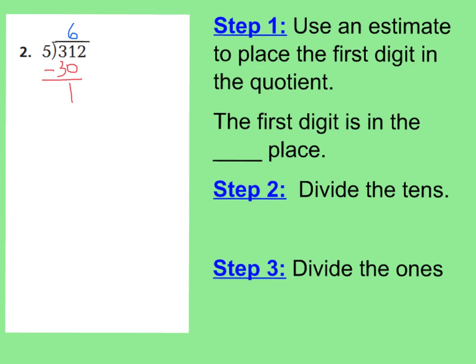Now I need to regroup and make them into ones. I'm going to drop down my two ones right next to my 1 ten. Remember, this has a value of 10 ones, and I have two ones — 10 plus 2 is 12 ones. So step three is divide the ones. I have 12 ones divided by 5. If I have 12 ones and 5 groups, I can put 2 in each of those groups. Multiply 2 times 5 — that's 10. Subtract to see how many ones are left over: 2 ones left over. Nothing else to bring down, so my remainder is 2. And 2 is less than 5, so I am correct.